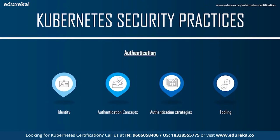For the API server to authenticate a request, the request issuer needs to possess an identity. At the time of writing, Kubernetes doesn't have a first-class notion of a human user — rather it assumes users are managed outside Kubernetes via a directory service such as LDAP, or single sign-on standards like SAML or Kerberos. User accounts are considered cluster-wide, so make sure usernames are unique across namespaces.